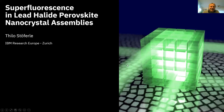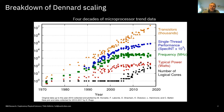Thanks for the kind invitation and introduction. Today I want to present our work that we recently did on lead halide perovskite nanocrystals. The motivation for our work comes from this trend curve for microprocessors — some key metrics there. You can see, for example, with the orange triangles, this is the number of transistors that has been doubling every two years over the last five decades — the so-called Moore's Law.